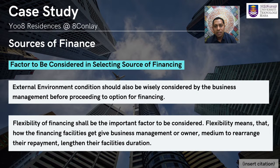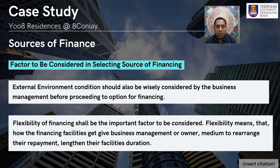For the factors to be considered in selecting sources of finance, several factors need to be considered in deciding the appropriate source — management shall wisely consider according to priorities. The first is external environment conditions: the COVID-19 pandemic and unstable domestic political scenarios might give greater impact to the whole economy, influencing business activities such as reduction in customer volume, slower construction progress, and delays in receiving inventory. The second factor is flexibility of financing — how the financing facility allows management to rearrange repayment and lengthen their facilities.